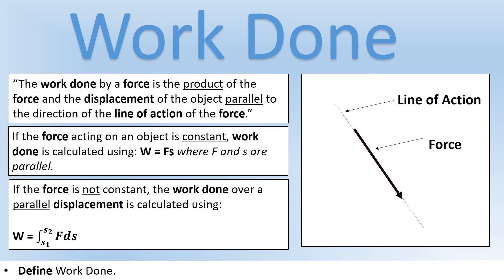What is the work done by a force? It's the product of the force and the displacement of the object parallel to the direction of the line of action of the force. The line of action of a force is just a line that extends forward and backwards from the force — we can see it's that red dashed line there. Displacement parallel to that would be in the same direction as the force.